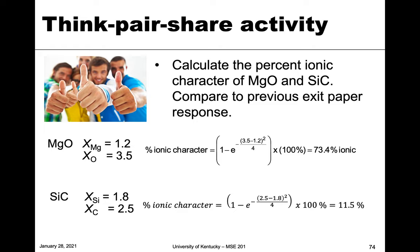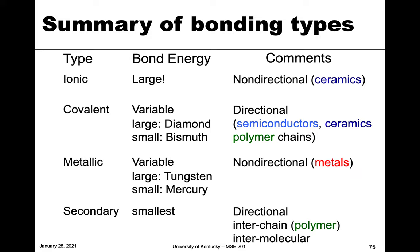Now let's summarize all the different bond types — ionic, covalent, metallic, and secondary. Looking at bond energy: ionic has very high bond energy; covalent can vary quite a bit, from very high like diamond to very low values; metallic also has a varying degree of bond energies — you can look at melting temperatures as a measure of that. Secondary bonding has the lowest bond energy by orders of magnitude, and those materials tend to have very low melting points.